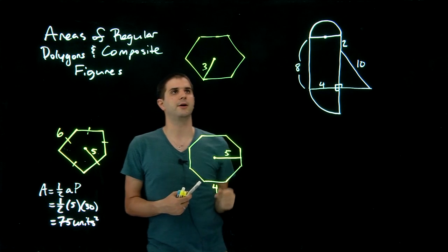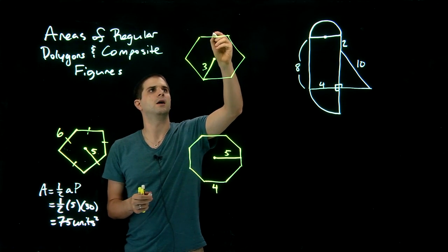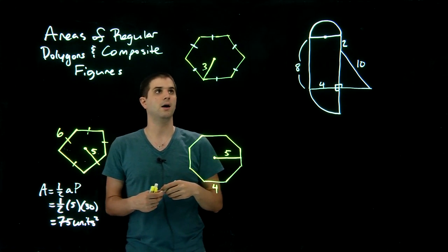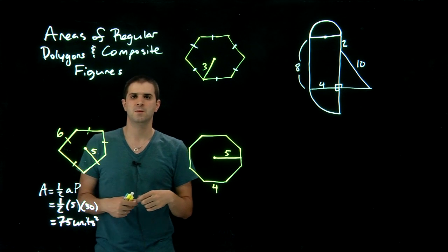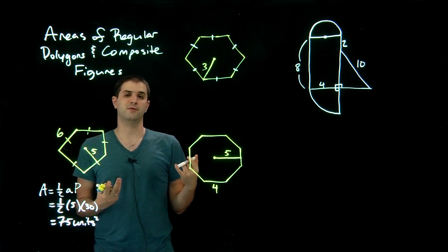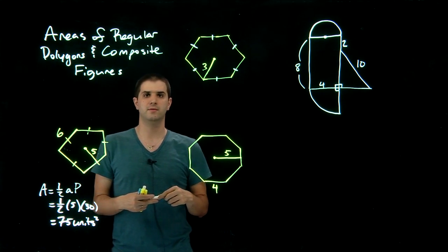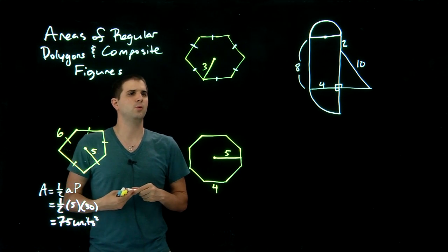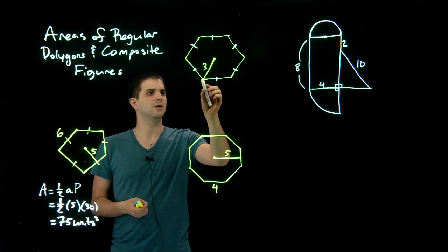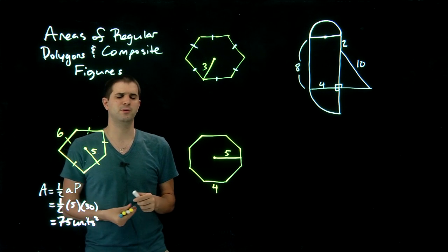Moving on to this example, we want to find the area of a regular hexagon. This has a little twist — you might think we don't have enough information, because all we're given is a radius. So when the equation is one-half AP, we don't know the apothem and we don't know the perimeter. So how can we find the area?